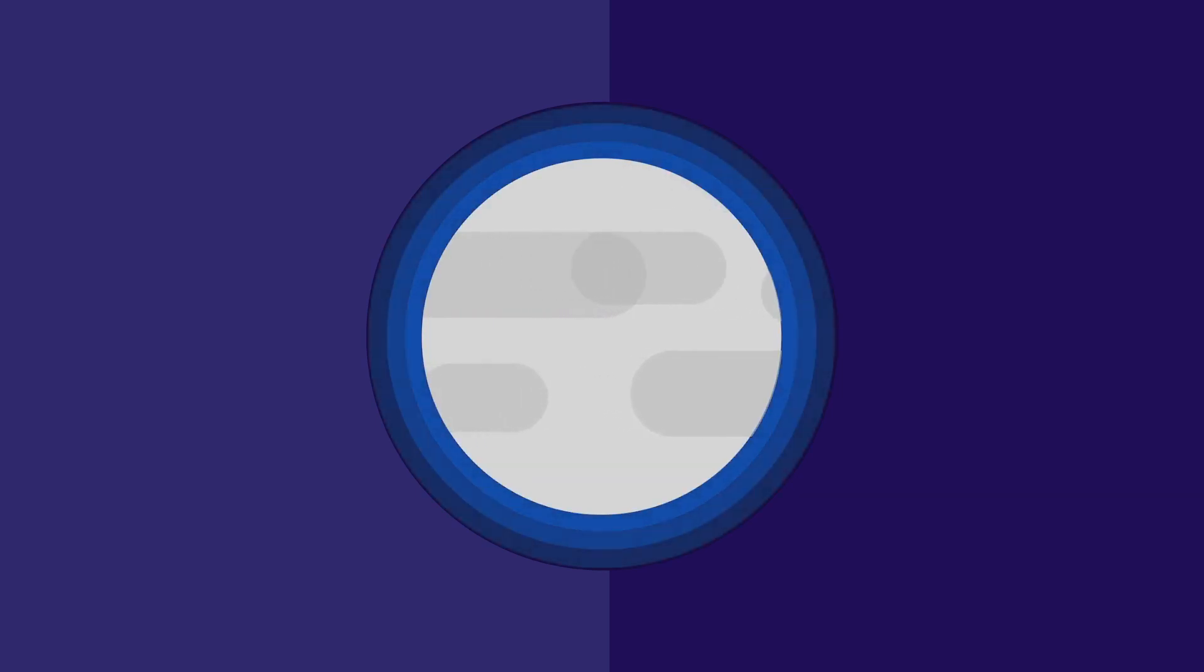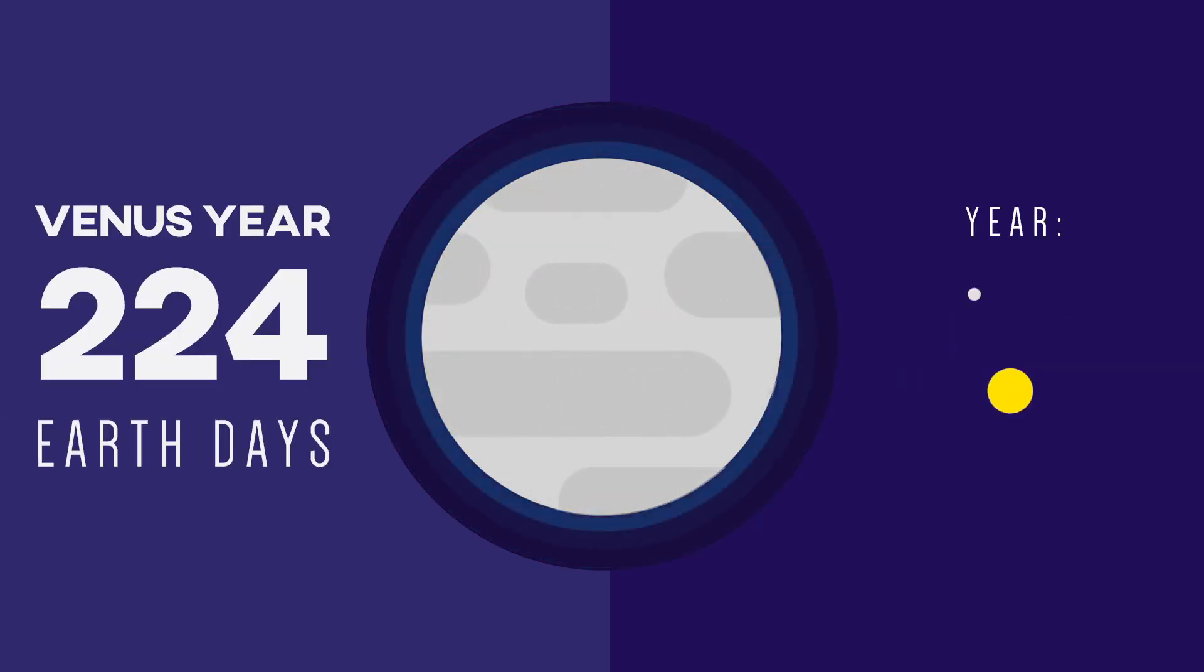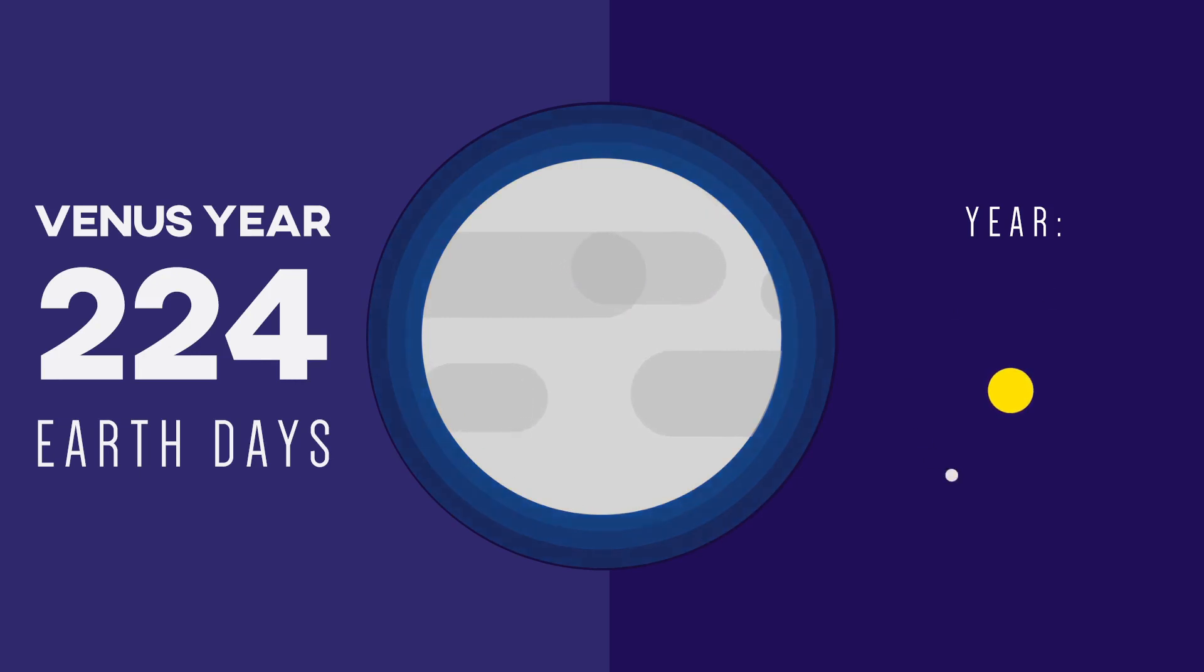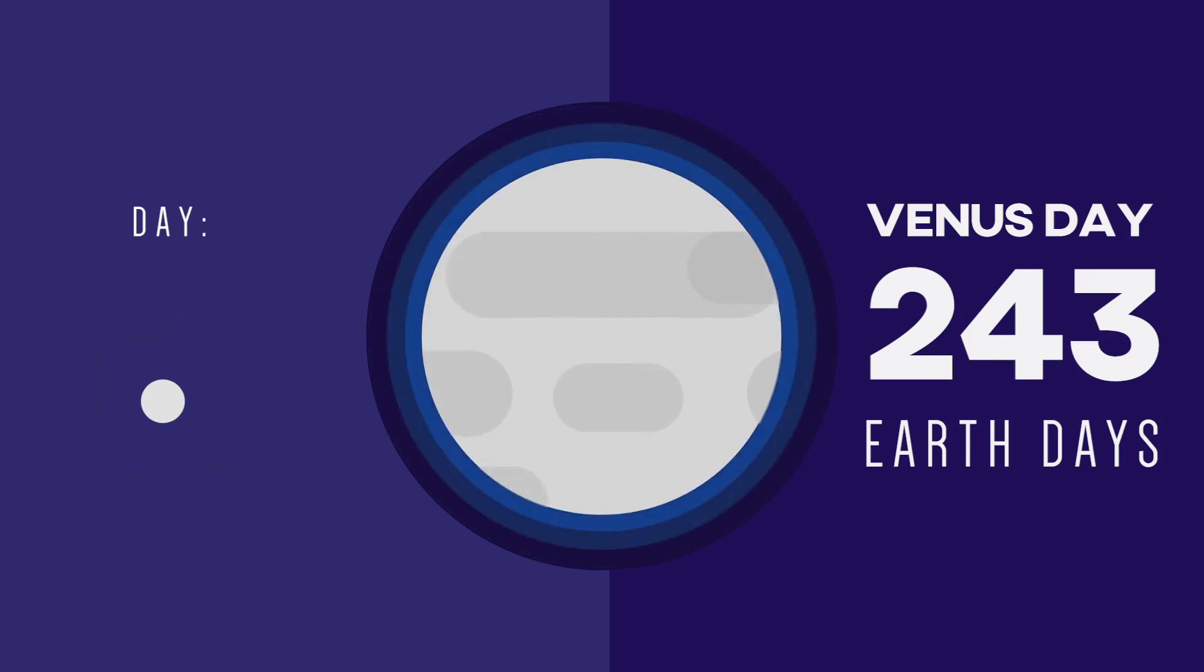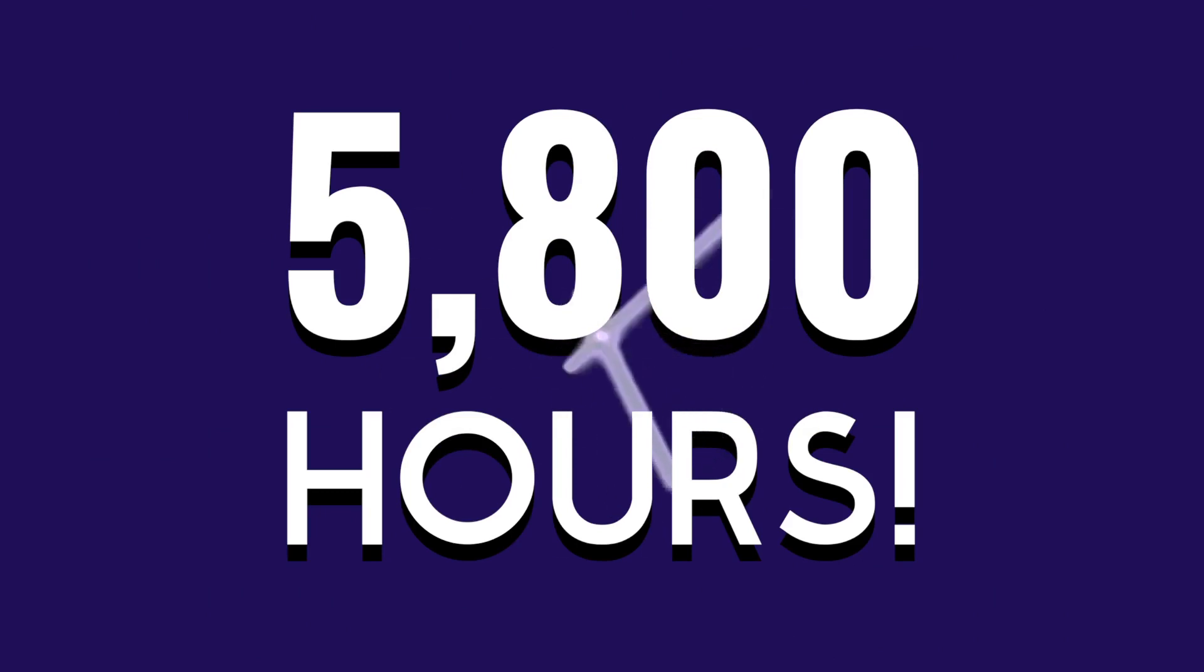A single day on Venus is longer than a year. Venus only orbits the Sun once every 224 Earth days. But Venus only rotates once every 243 Earth days. In other words, a single day on planet Venus lasts for 5,800 hours.